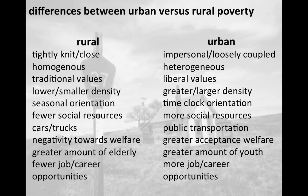In rural areas families typically have to own vehicles — cars or trucks. With urban families, public transportation is available so many don't own a vehicle at all. In rural areas there is also a greater negativity towards welfare or any type of government support, where in urban areas you see greater acceptance. Rural families are more likely to say 'I don't need help, I'm fine on my own,' and their pride might interfere with accepting any assistance.